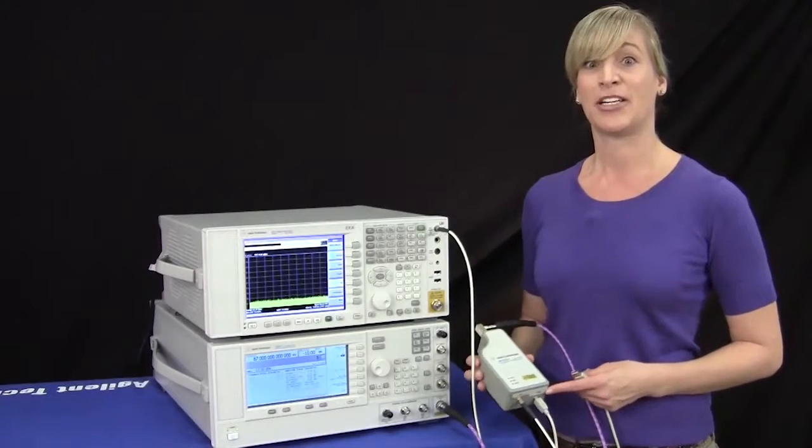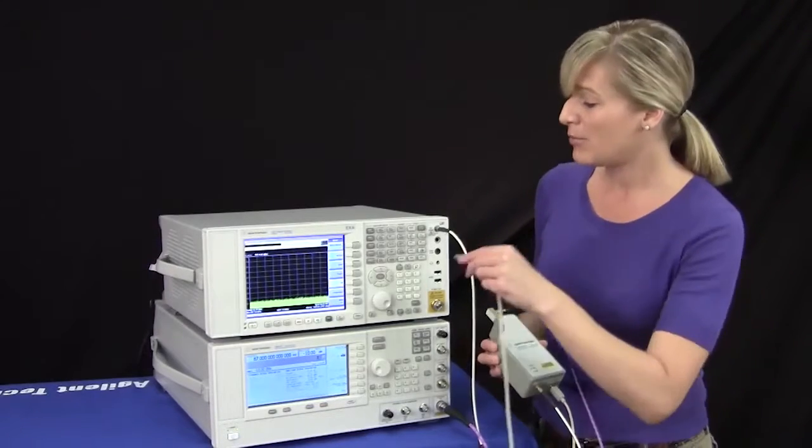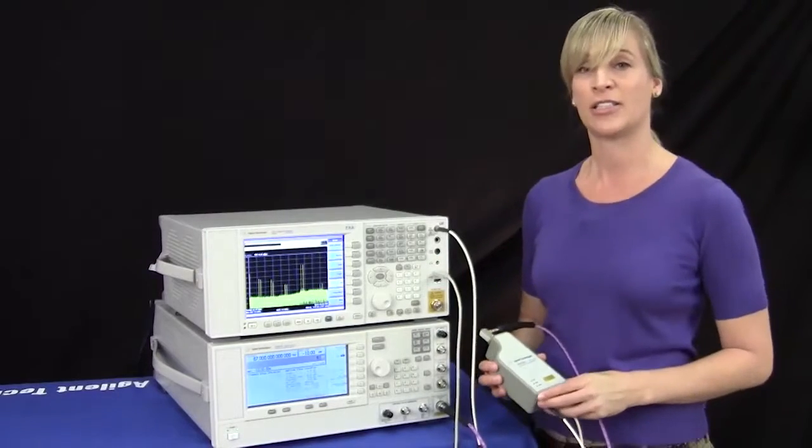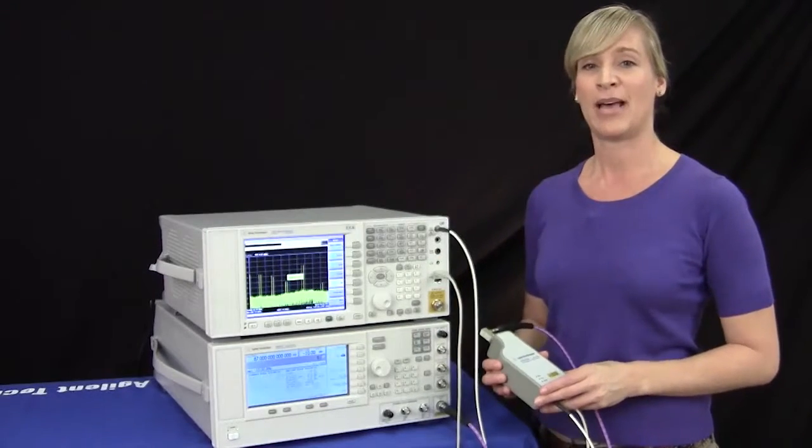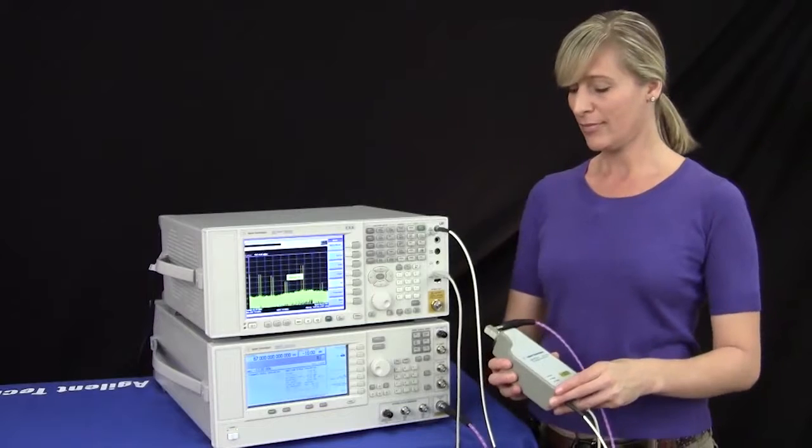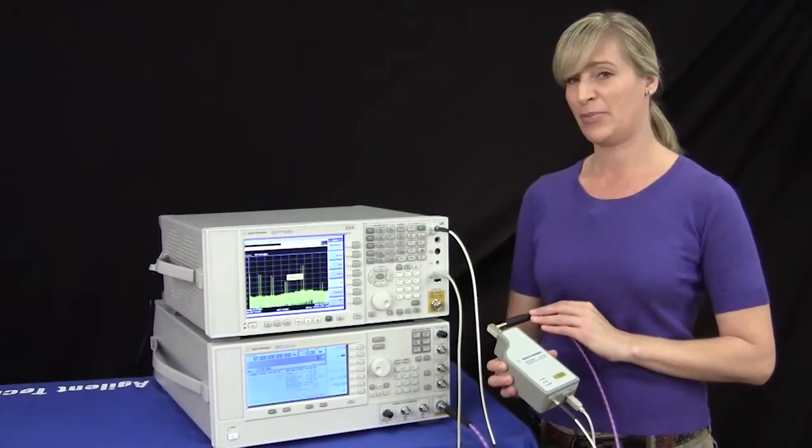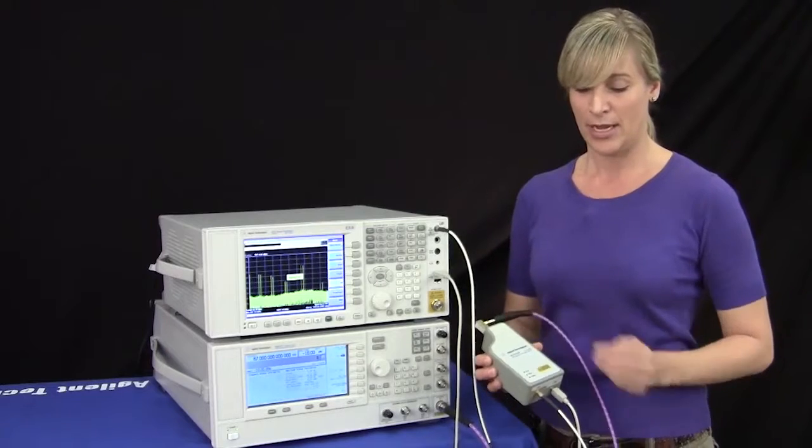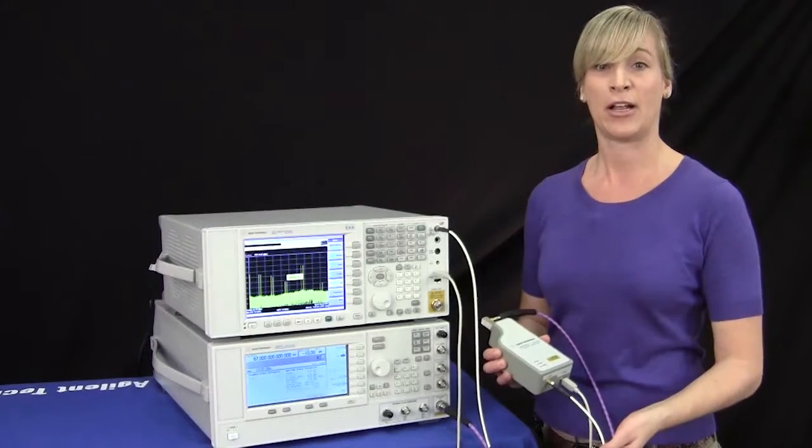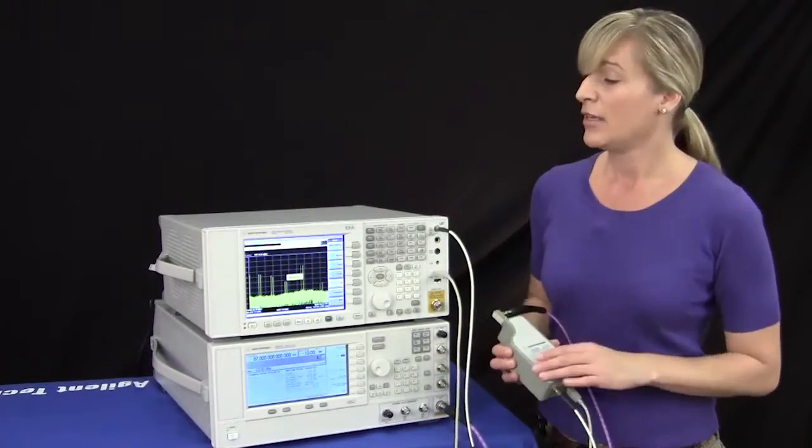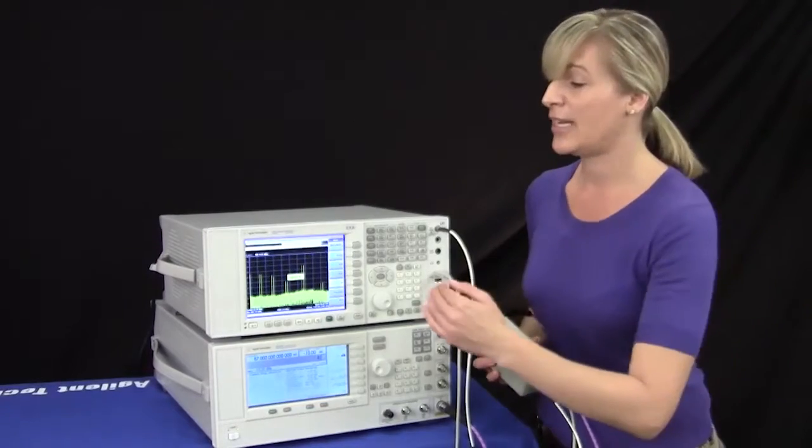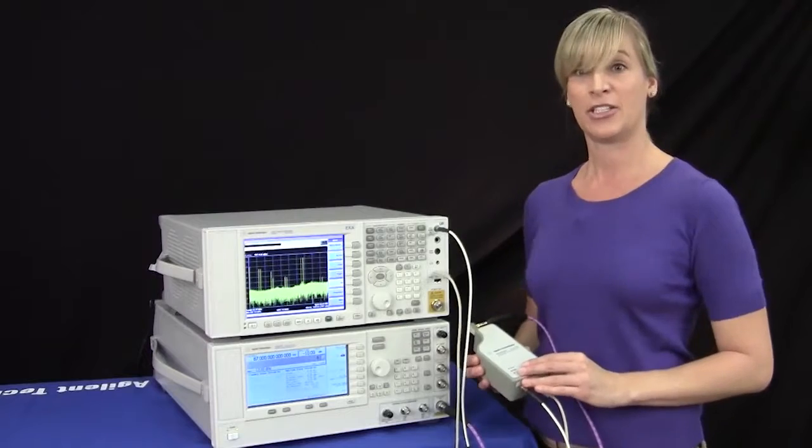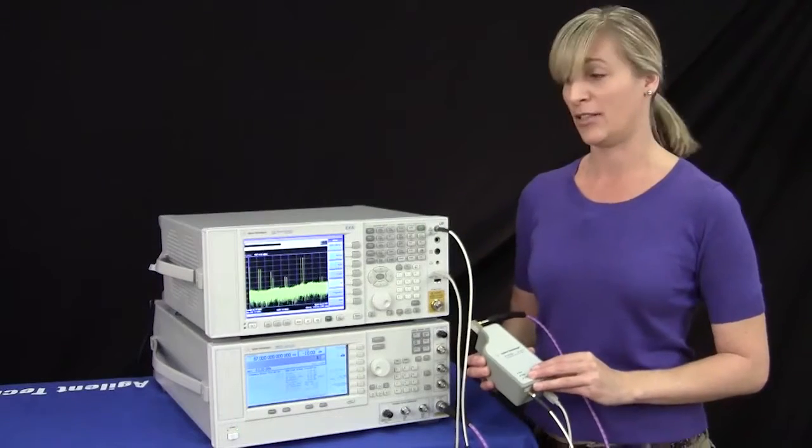The smart harmonic mixer is easy to set up. You simply plug the USB into the USB port of the signal analyzer and the hardware is automatically detected. The RF signal from the PSG is now coming into the input of the mixer and we have a single cable now for the LO and the IF. The EXA automatically sets the display to show the frequency span of the mixer and it adjusts the power level of the local oscillator.